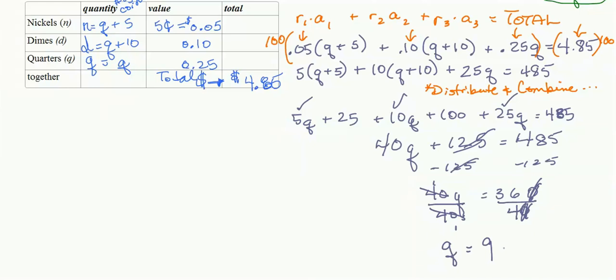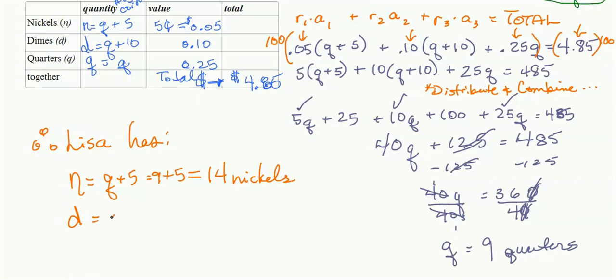Let's go back and answer the rest of the questions. Quarters. All right, let's go back up top, and we'll say, Lisa has 14 nickels based on our representation of that for dimes. She has Q plus 10, so that would be what, 9 plus 10. So, she has 19 dimes. And then, finally, she still has the 9 quarters. All right, and we're done.